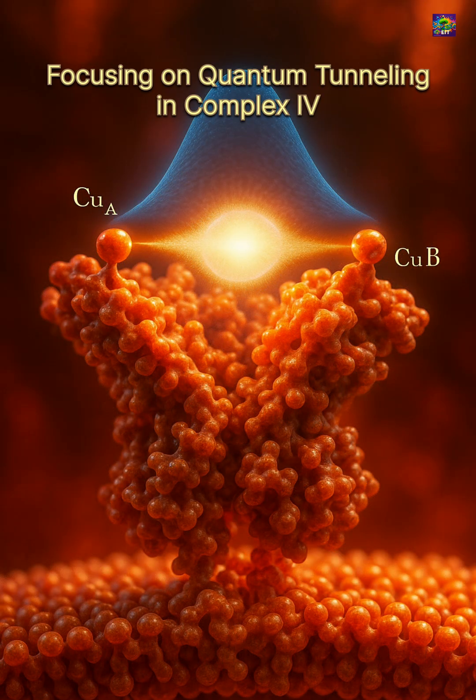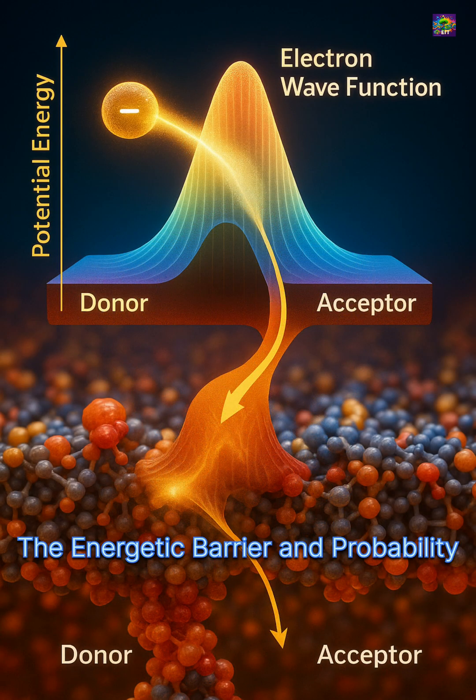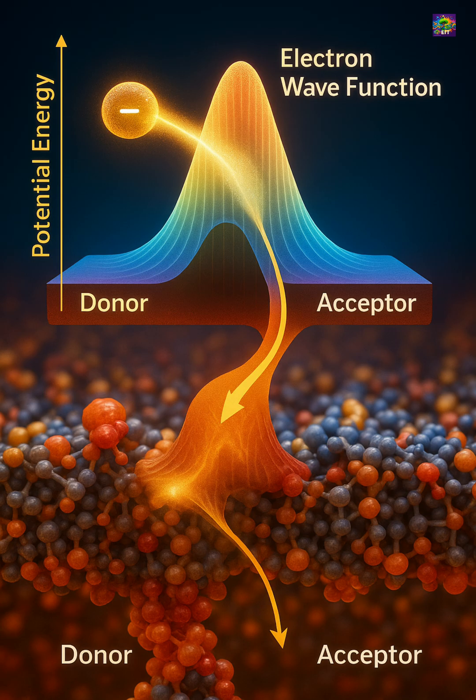Normally, electrons should only move when two molecules are close enough for a direct transfer. But inside mitochondria, some of these molecules are slightly too far apart for classical physics to explain how electrons cross that gap.